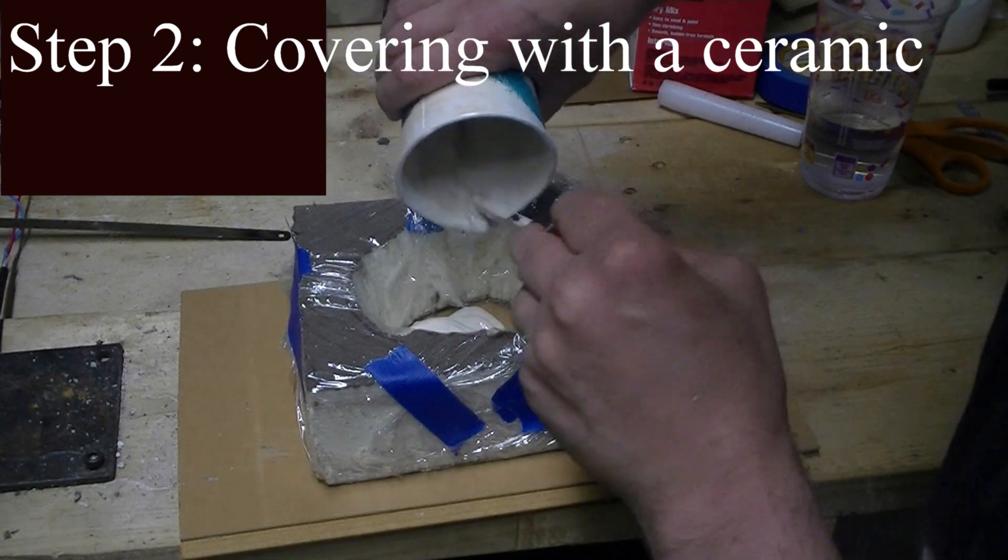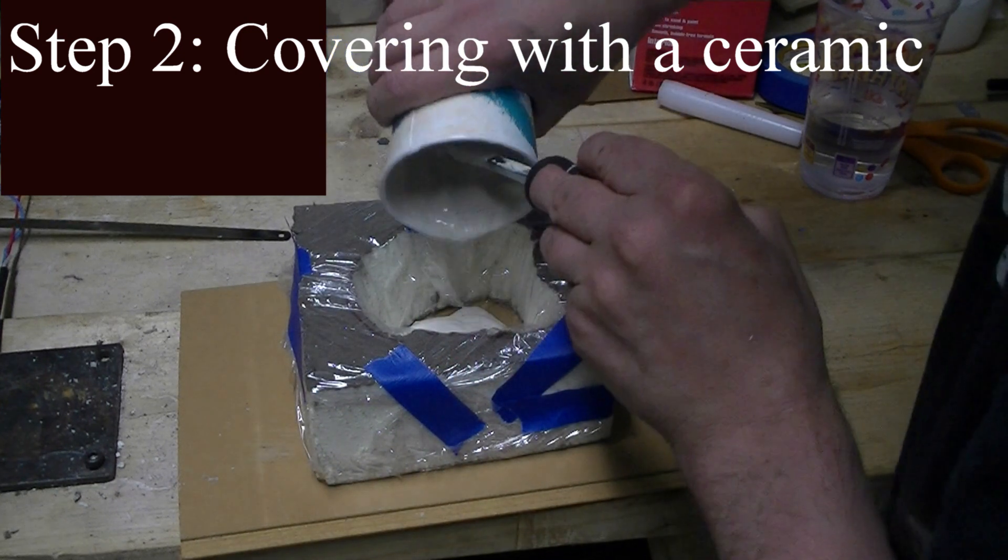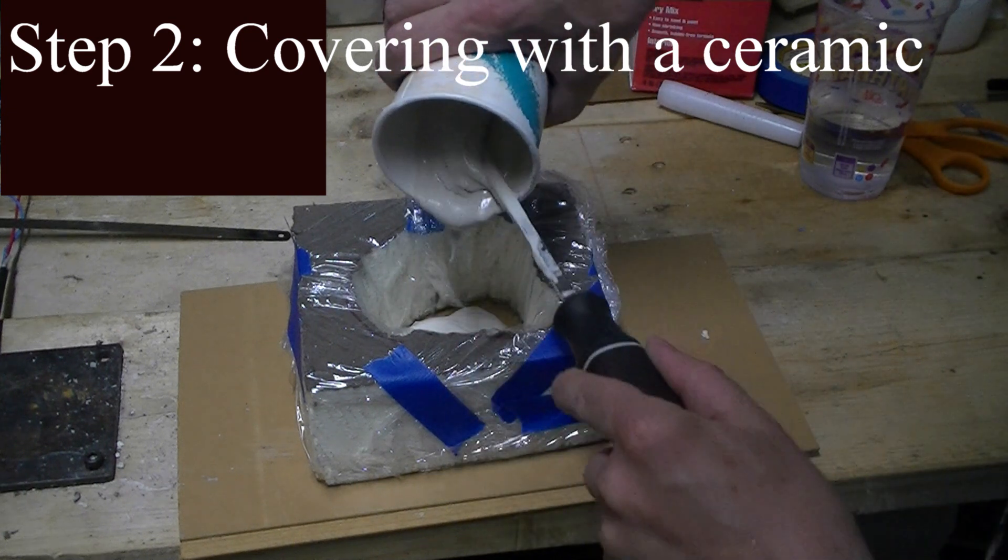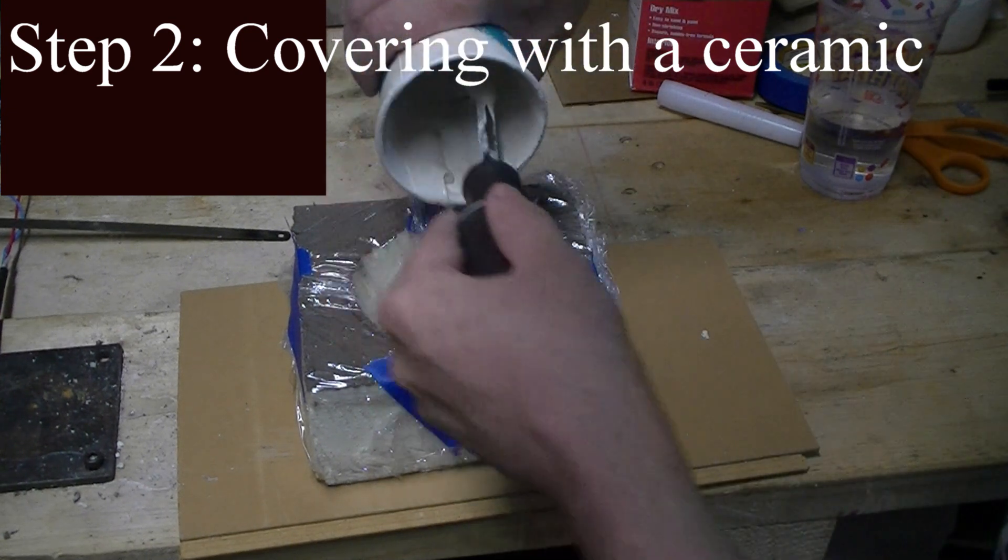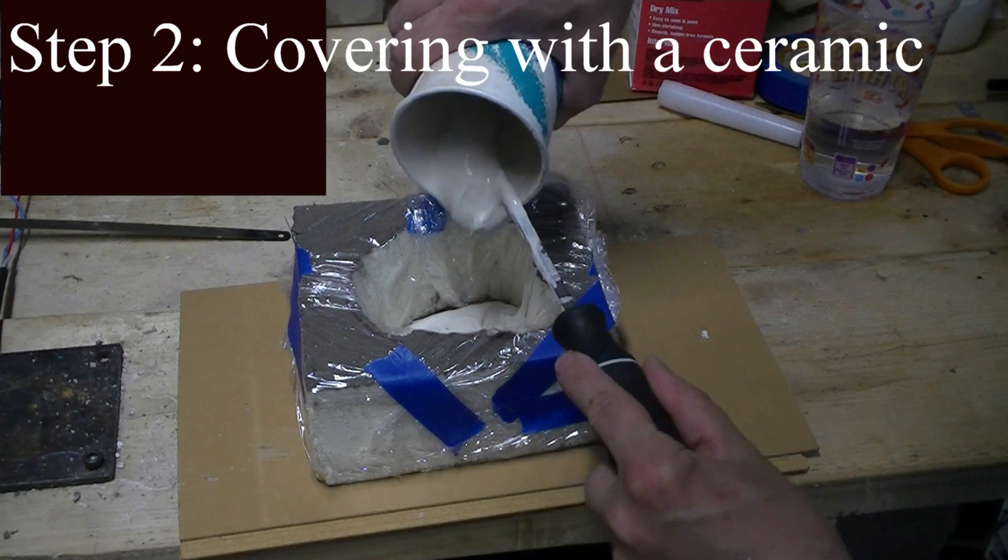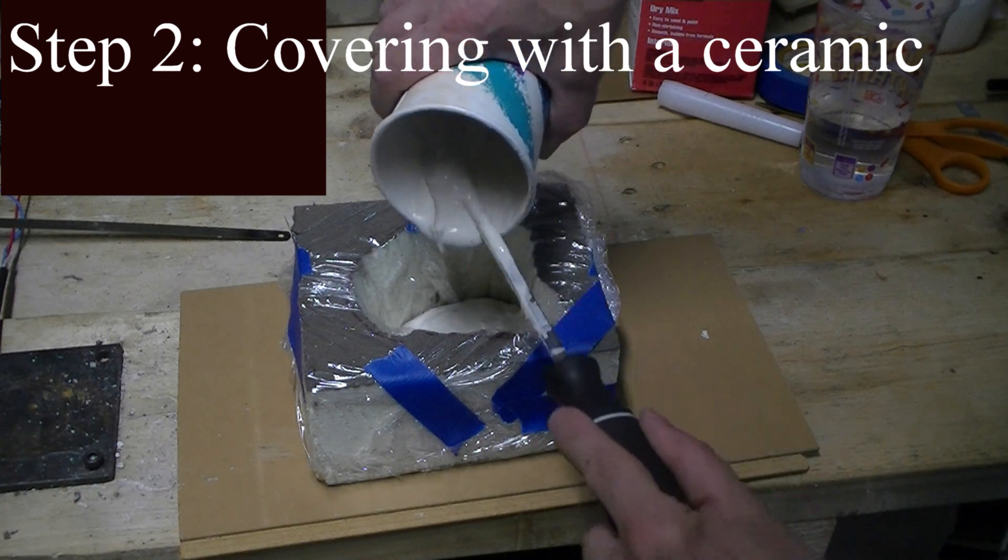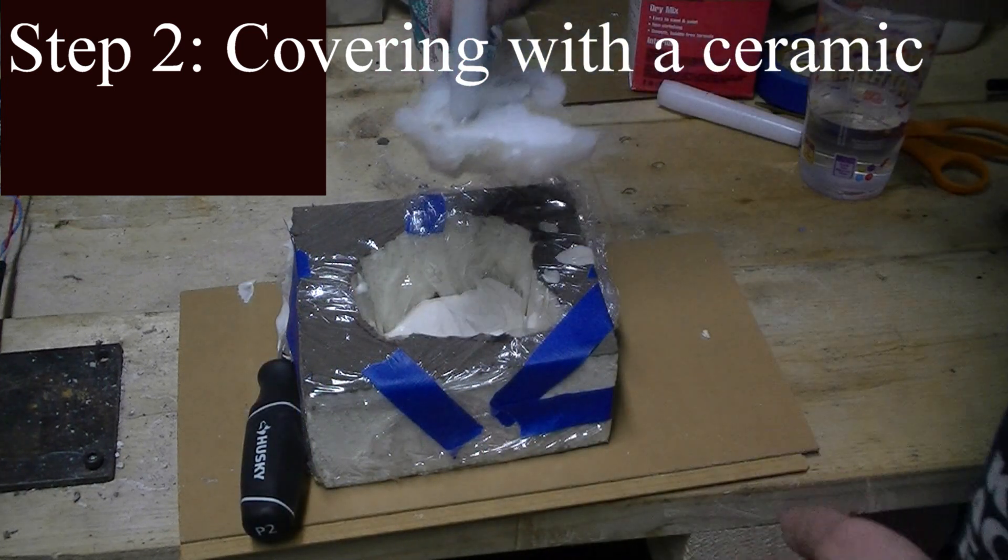When they do this in industry, they're not casting bismuth, they're casting higher temperature metals. These ceramics are more alumina based. After they burn the wax out from these alumina based ceramics, they need to fire the alumina so that when they pour the molten metal in, the thermal shock doesn't cause the mold to crack.